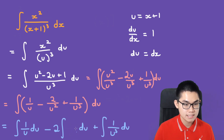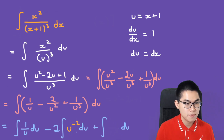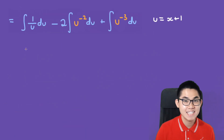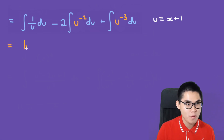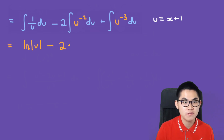Instead of writing 1 over u squared, I'll rewrite it as u to the power of negative 2, and similarly 1 over u cubed becomes u to the power of negative 3. Now it's time to find the antiderivative. The antiderivative of 1/u du is the natural log of the absolute value of u.